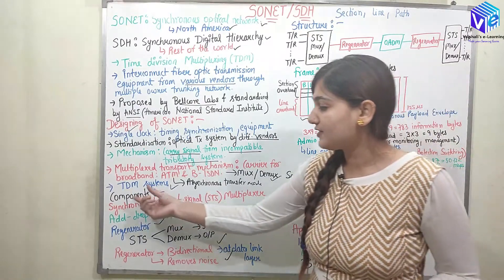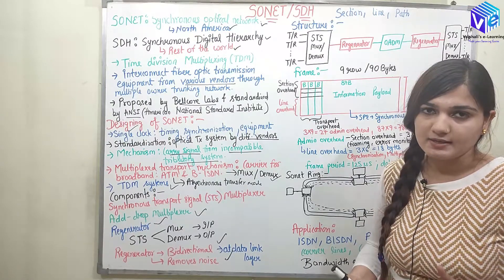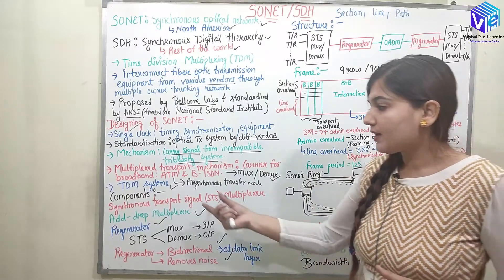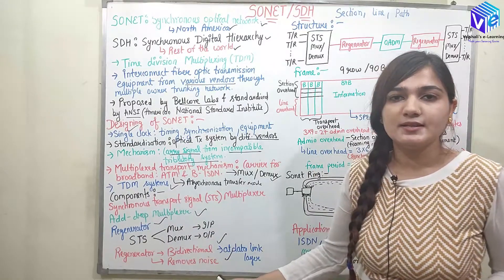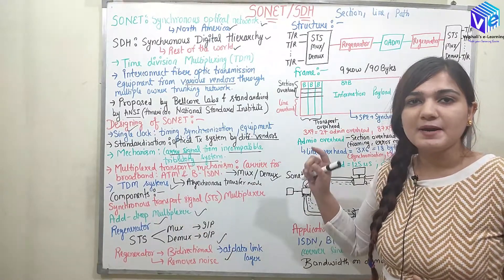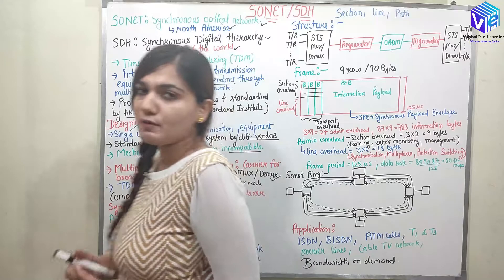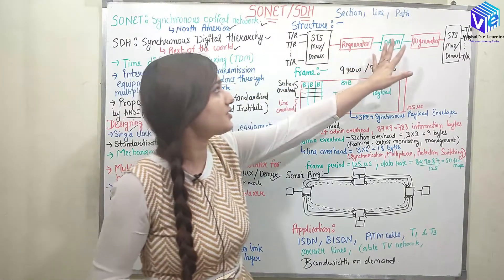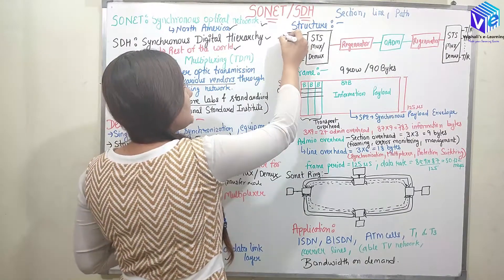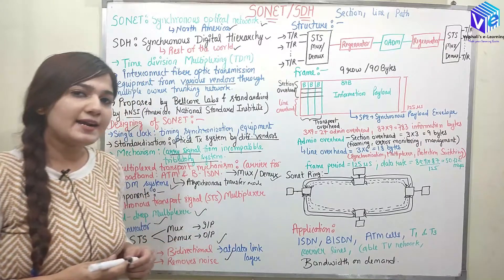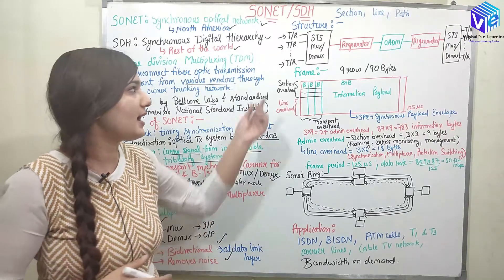After that we have the Synchronous Transport Signal (STS). The STS multiplexer is connected to the clock. The STS multiplexer contains both MUX and DMUX inside it. MUX is used for input and DMUX for output. You can see the structure — various terminals are represented as transmitters or receivers, making it a bi-directional circuit.